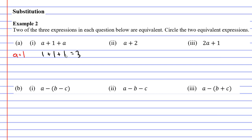For our second expression, a plus two, if a is one we get one plus two, which is also three. For our third expression, two a plus one, we go two times one plus one, which also equals three. This didn't really help us because all three came up with the same result, so we need to pick a different value.